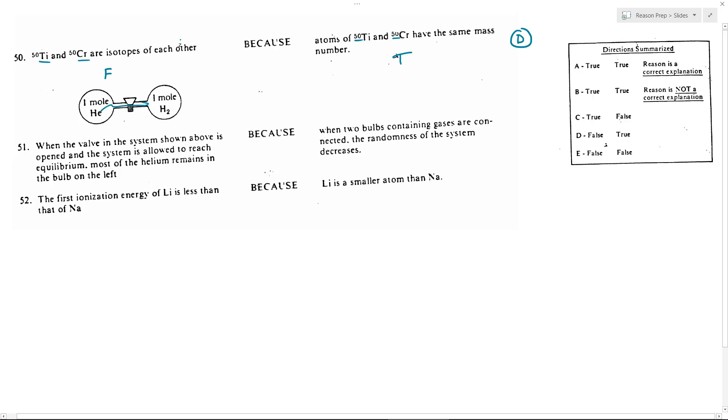by diffusion, the HE is going to travel over here, the H2 is going to travel over here, and you're going to get a constant or an evenly distributed, evenly mixed helium and hydrogen throughout that entire system.